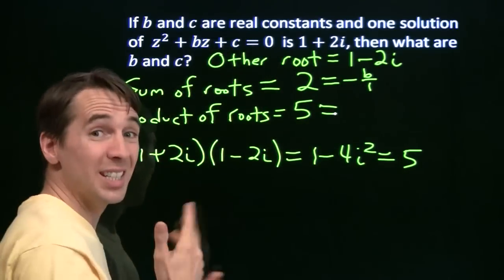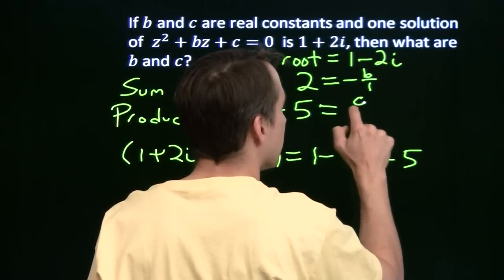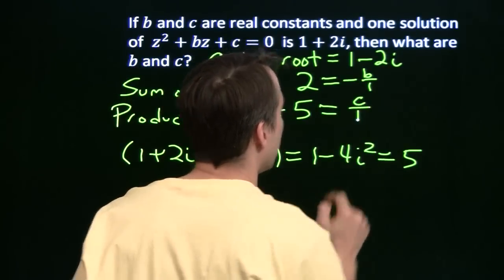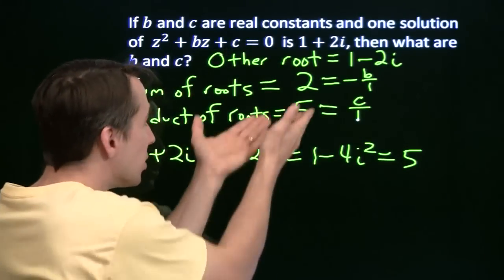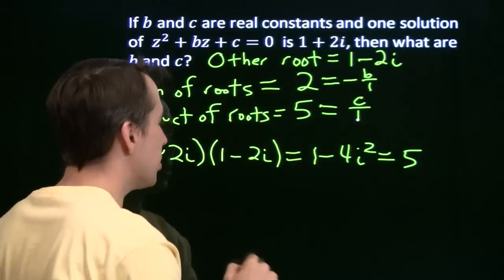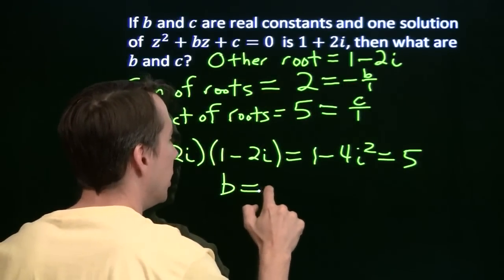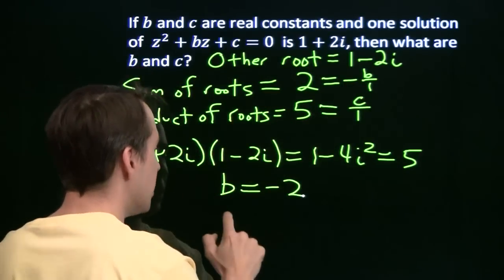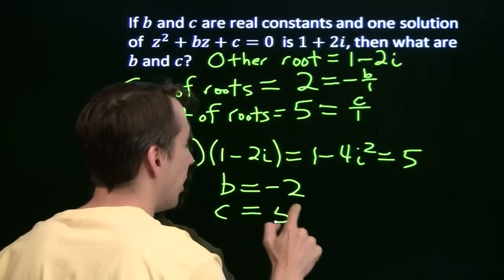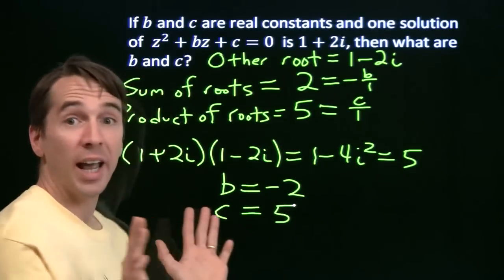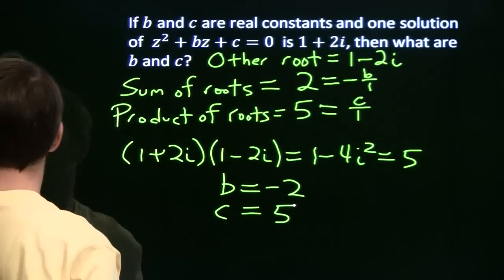And the product of the roots is c over a, and again a is just 1. So solving this, we get b equals negative 2, and solving this, we get c equals 5. And we never had to touch the quadratic formula. That's pretty slick.